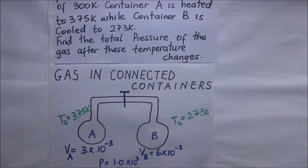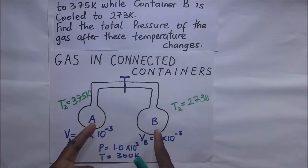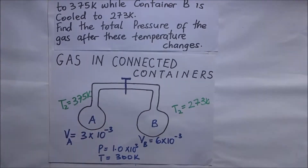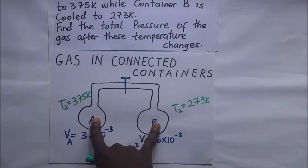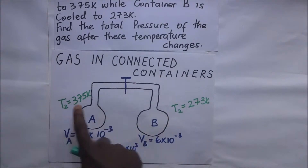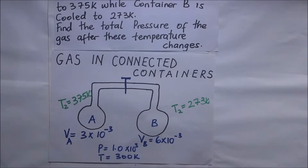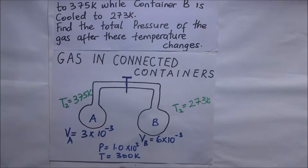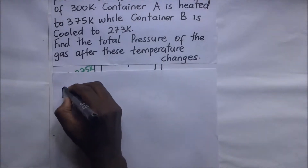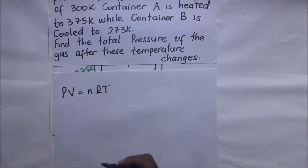We need to find the total pressure of the gas after these temperature changes. The gas in containers A and B is connected via a tap, so the number of moles of gas remains the same. The number of moles before the temperature changes equals the number of moles after. We use the ideal gas equation: PV = nRT.